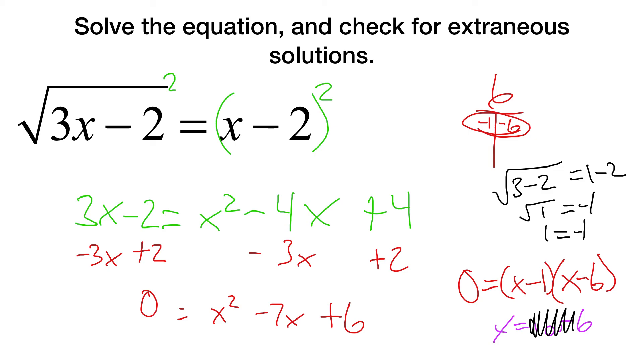Alright, so now let's try 6. Square root of 18 minus 2 is 16 equals... Sorry, I'll actually write this one out a little more. 18 minus 2 equals 6 minus 2. Square root of 16 is 4. 4 is 4. Yep. X equals 6, and that is our answer.